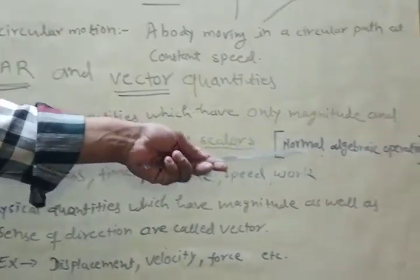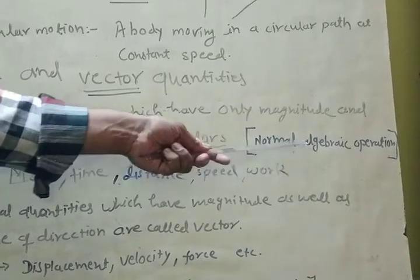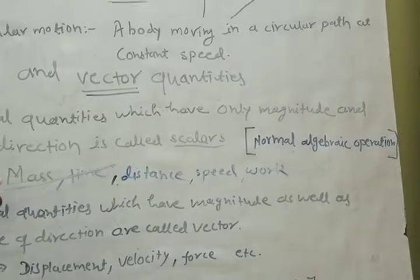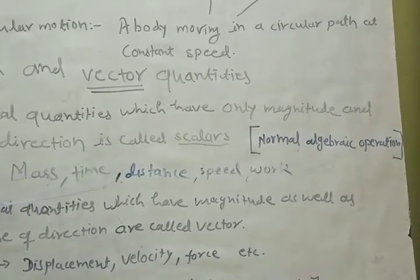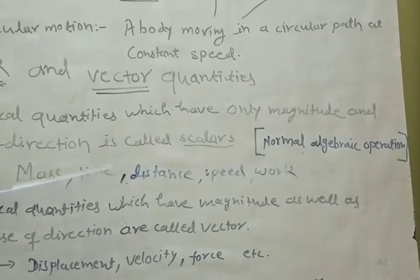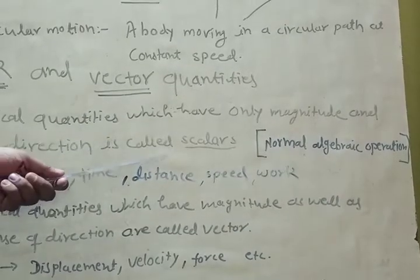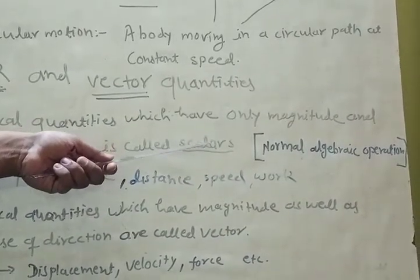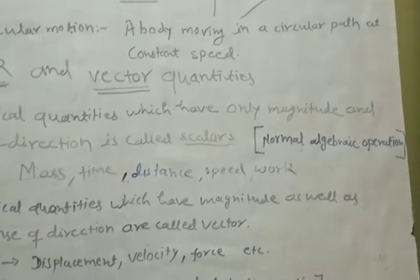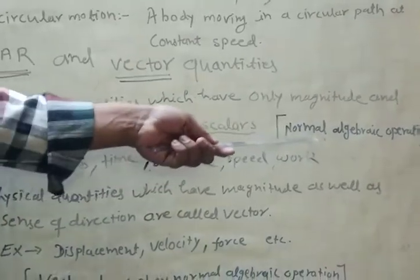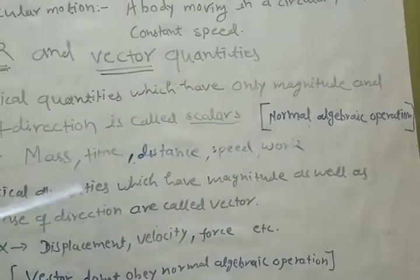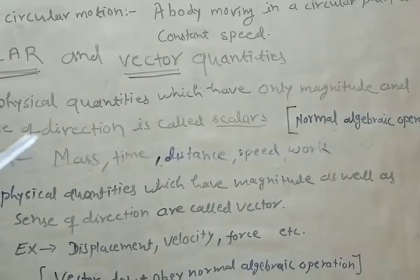It is normal algebraic operation. Normal algebra is plus minus. 10 kg, 2 kg minus, 10 meter, 8 meter minus. 10, 8 plus, plus. So this is simple numerical plus in quantity plus.